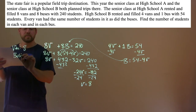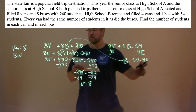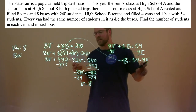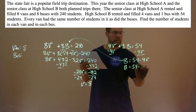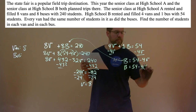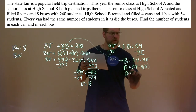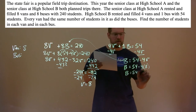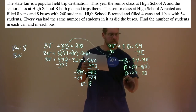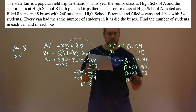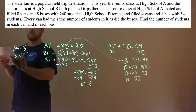The van had 8 students. Now for the bus: B equals 54 minus 4 times 8. 4 times 8 is 32, B equals 54 minus 32, which is 22. So there are 22 students on each bus and each van had 8 students.